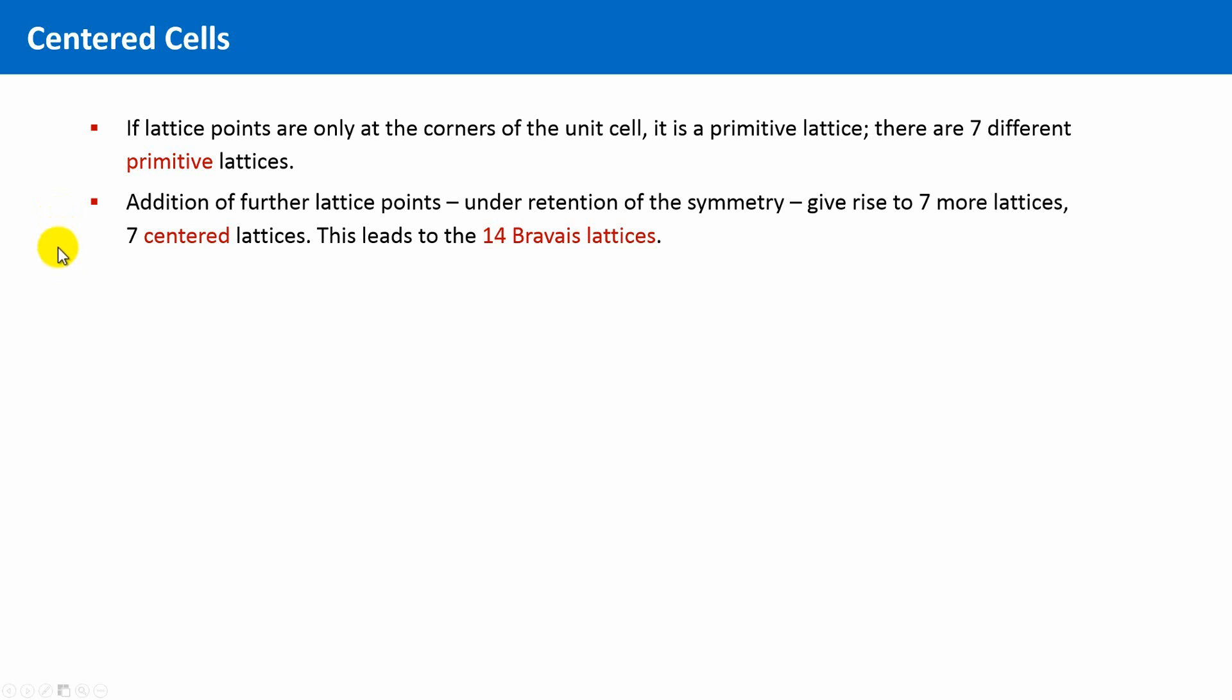We will see that if we allow to add further lattice points, we get seven more lattice types, giving 14 in total, leading us to the Bravais lattices.